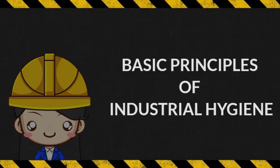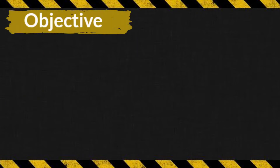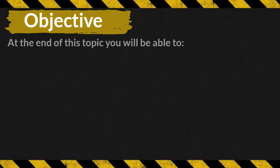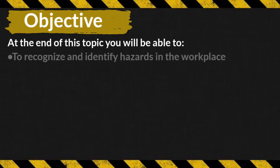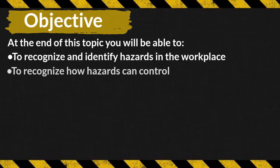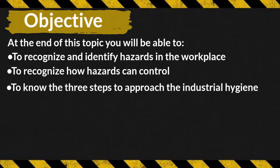Let's start our discussion. The objective of this topic is to address the need and importance of knowing the concept in hazard identification, the many types of hazards that may exist in the workplace, and the various elements of an effective hazard control program. At the end of this topic, you will be able to recognize and identify hazards in the workplace, recognize how hazards can be controlled, and know the three steps to approach industrial hygiene.